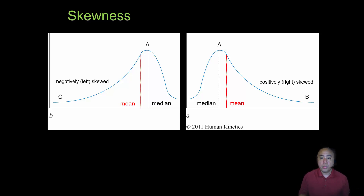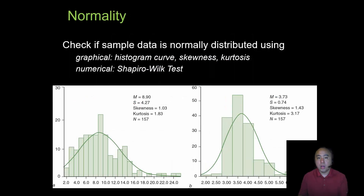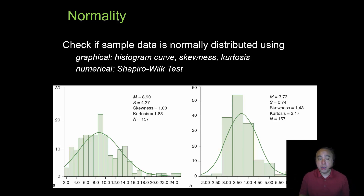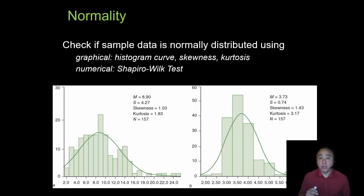The degree to which the distribution is skewed ultimately determines how normal that distribution is. This matters because the statistical tests we'll be covering largely depend on the distribution being normal. We can assess normality using a histogram, by looking at skewness and kurtosis on the shape of the curve.